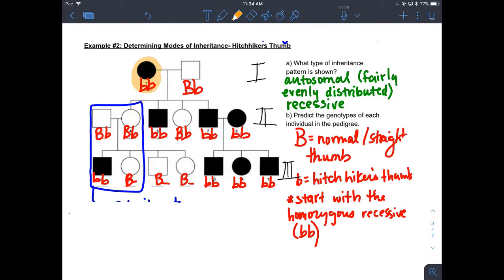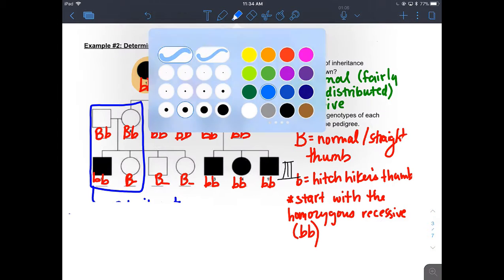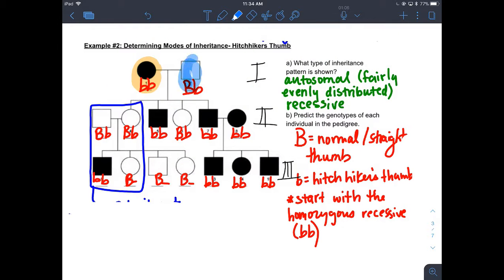We also know that the partners here of this person in generation one must be heterozygous because its offspring have the trait of hitchhiker's thumb. And if each parent gives one allele to their offspring, then the father must be heterozygous. And following that same logic, we can continue along the generations and label each of the genotypes for each of the offspring until we get to the part that I've highlighted in blue, where we see that this parent here must be heterozygous.